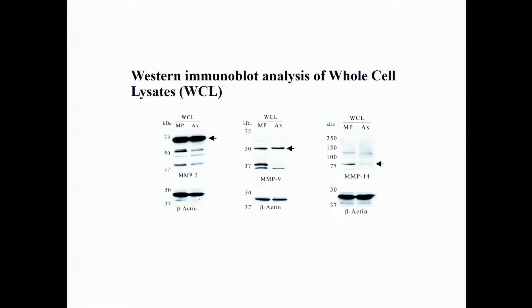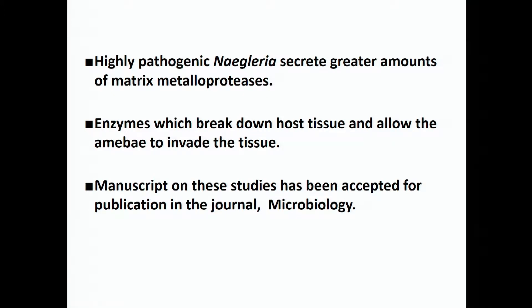To confirm the presence of matrix metalloproteases, we made whole cell lysates of the amoeba, separated their proteins on gels, and stained with antibodies to matrix metalloproteases. Highly pathogenic Naegleria secrete greater amounts of matrix metalloproteases, and these are definitely the enzymes breaking down host tissues to allow invasion. We just had a manuscript accepted for publication in the Journal of Microbiology on these studies.